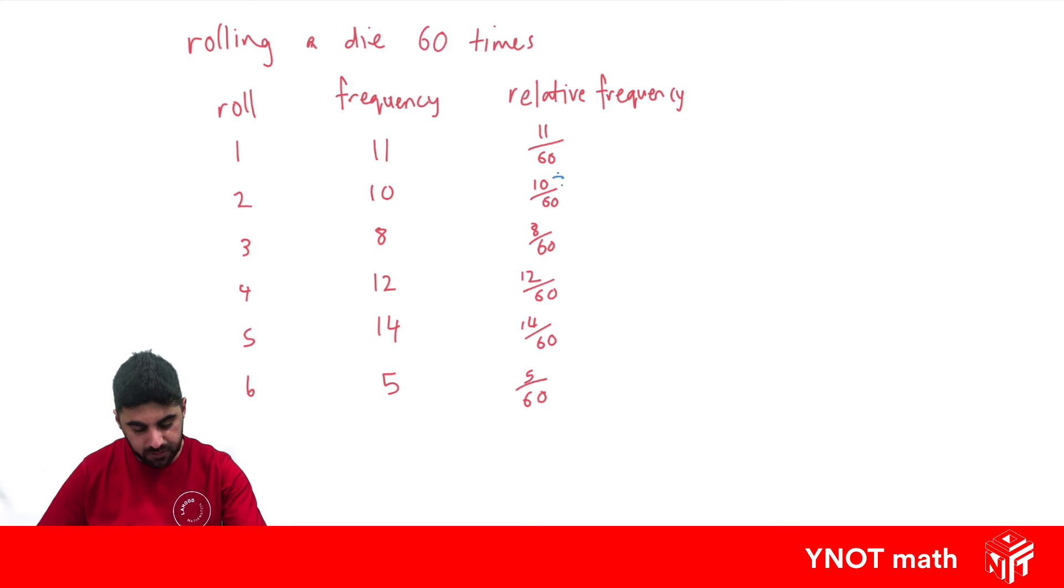11 over 60 is simplified. This one can be both divided by 10. This one we can divide by 4. This one we can divide by 12. This one we can divide by 2, and this one we can divide them both by 5.